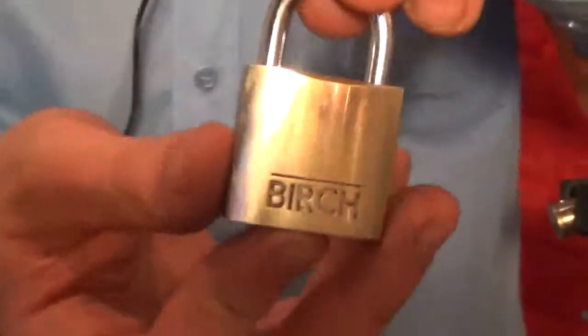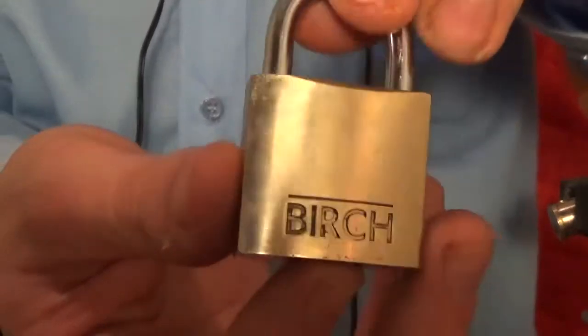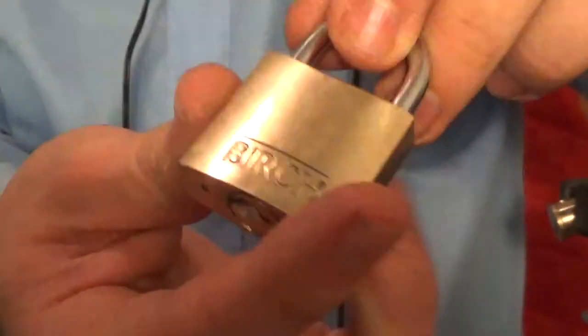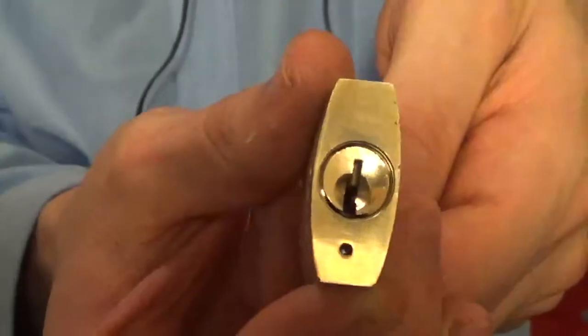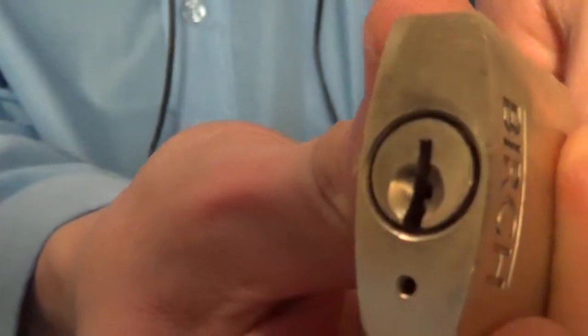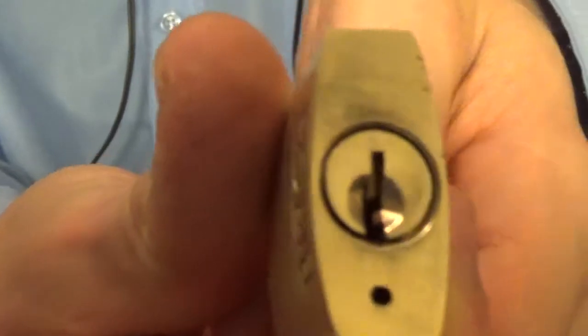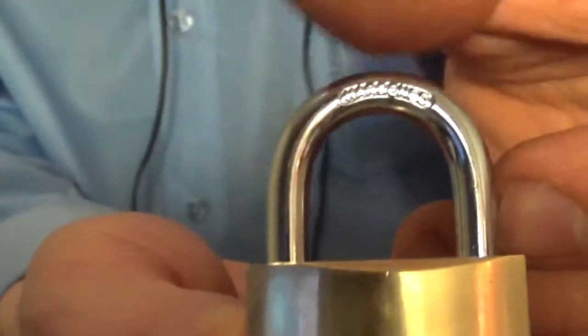Alright, so the lock we've got here is a Birch, actually Charles Birch. That's what that stands for. Got this keyway, nothing too spectacular, it's kind of wide open. Hardened shackle, brass body, 32mm.